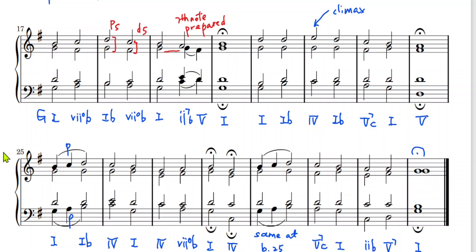This is bar 17. We can see there are two instances of a passing 6-3. We can also observe the doubling of the third, which is not very often and not encouraged during the exam. But since this is composed by Schumann, he made it an exceptional case. It looks like a parallel or consecutive here between the soprano and alto. But if you look at the F, this is an F sharp according to the key signature — so a perfect 5th going to diminished 5th, or diminished 5th going to perfect 5th, does not count as consecutives.